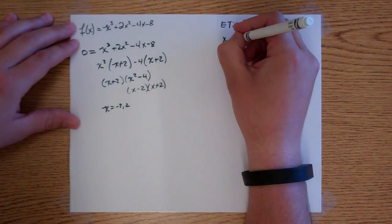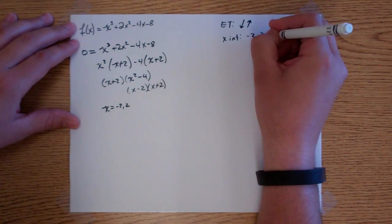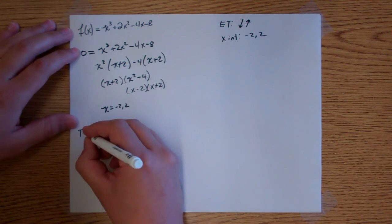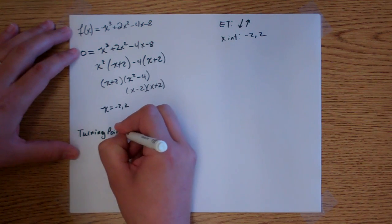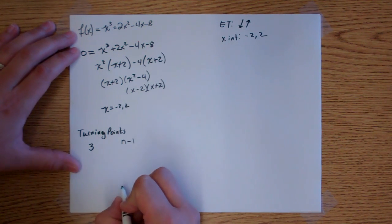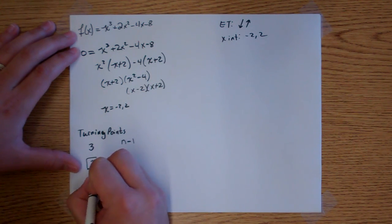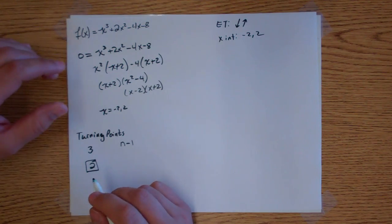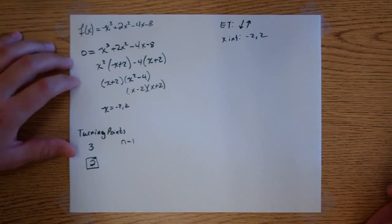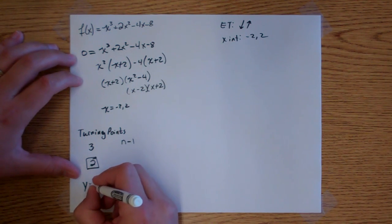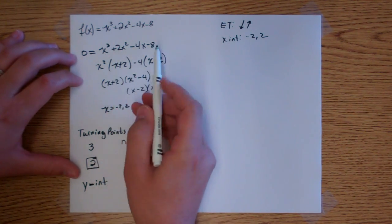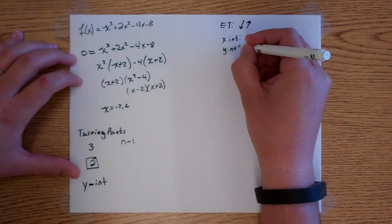So now we know our x-intercepts are negative 2 and 2. Now, turning points — since our degree is 3, our turning points are n minus 1, which is 3 minus 1 equals 2. So we know this graph turns twice. We're not going to find exactly where, because that's a calculus topic, but we know it turns twice. To find the y-intercept, you set all the x's to 0, which gives us 0, 0, 0, negative 8. So the y-intercept is negative 8.